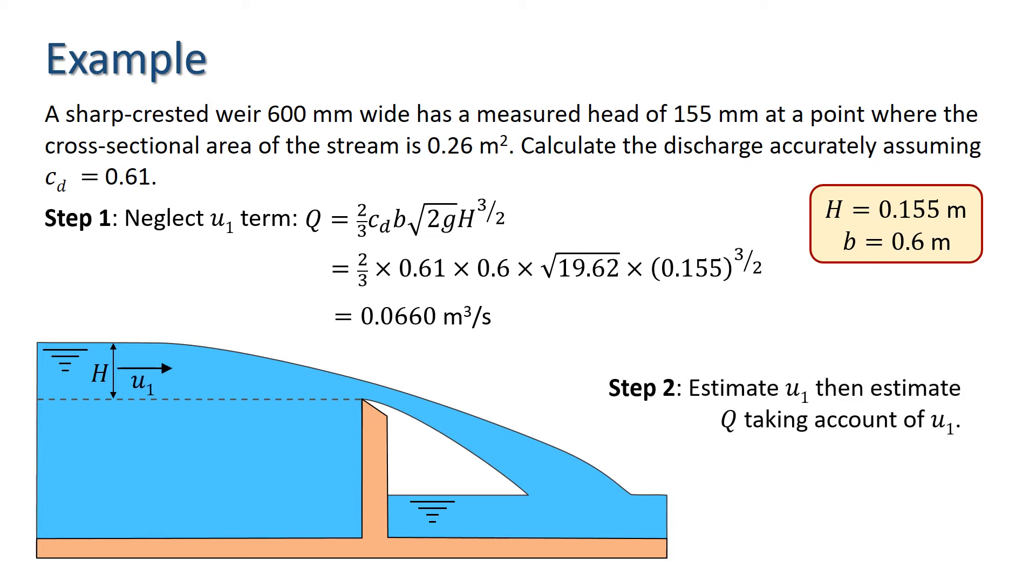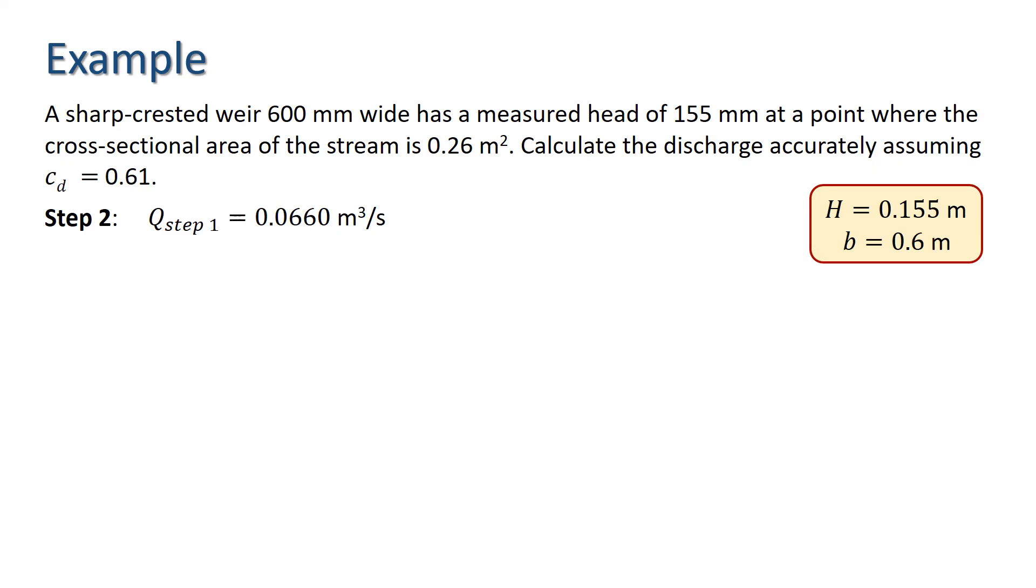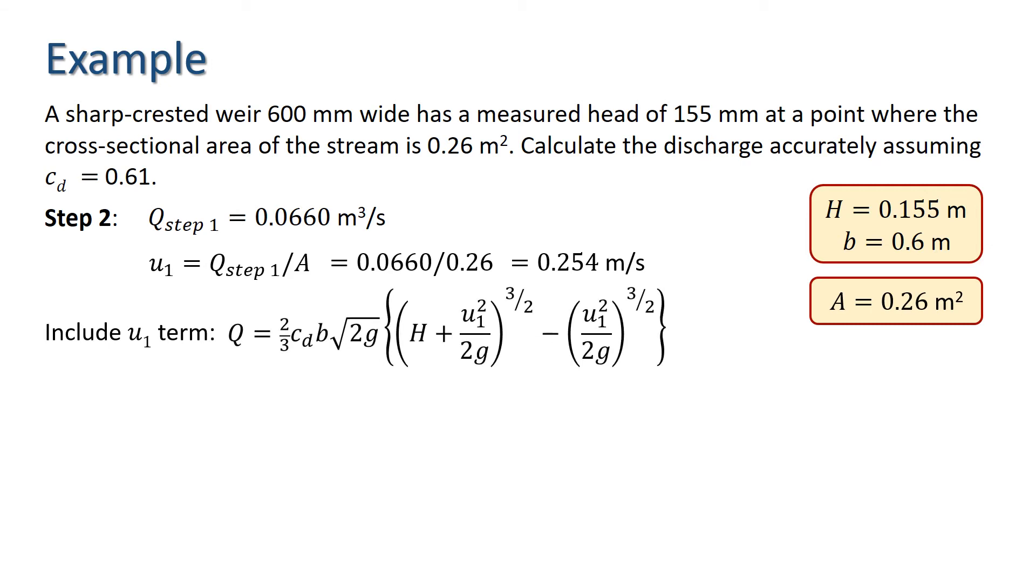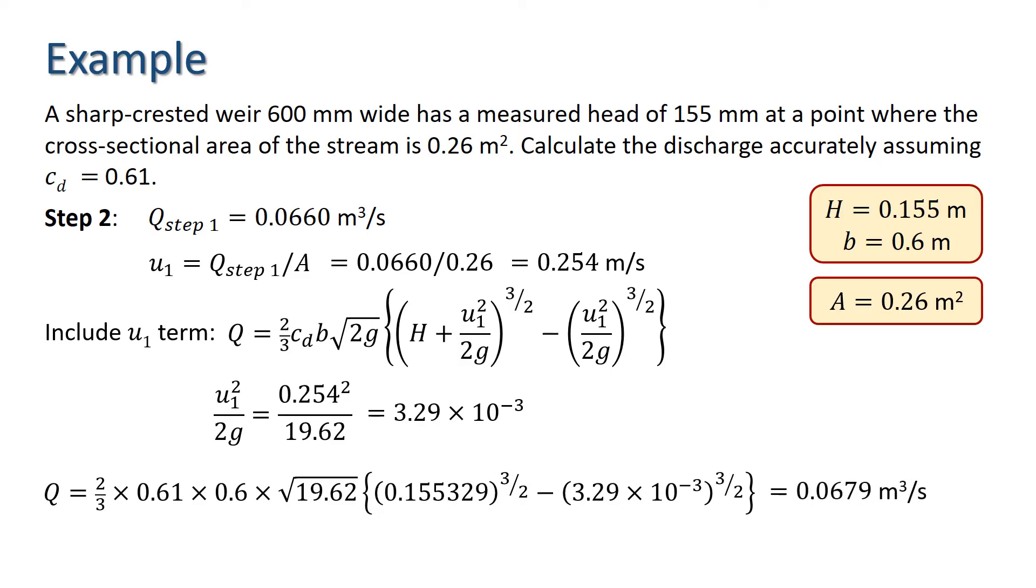Next, we use this value of Q to estimate the upstream velocity U1, and then use the more accurate equation for Q that takes account of U1. So we have our estimate of discharge, and the continuity equation tells us that U1 is discharge divided by the upstream area, which gives us an estimate of 0.254 meters per second. Now we can make a more accurate estimate of Q using this value of U1. Here's the equation for Q that includes U1. Calculating U1 squared over 2G, we get 3.29 times 10 to the minus 3, giving us the value of Q of 0.0679 meters cubed per second.